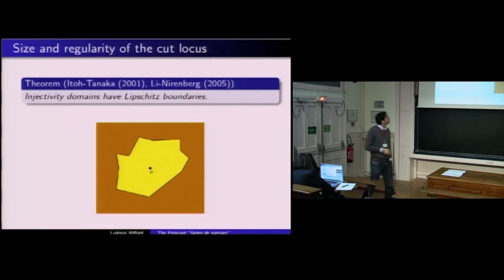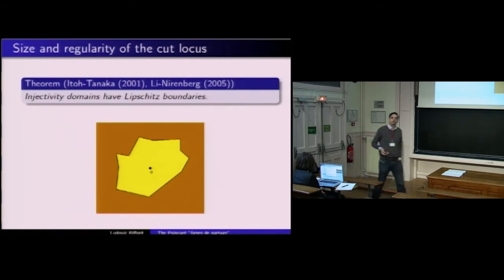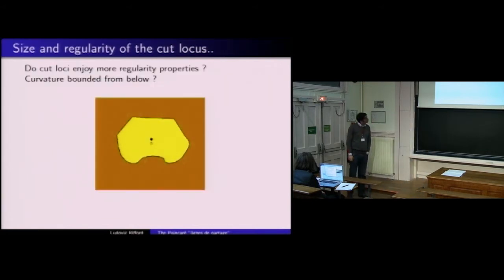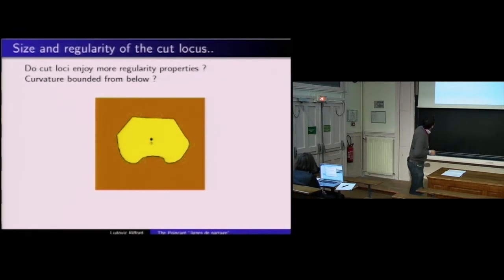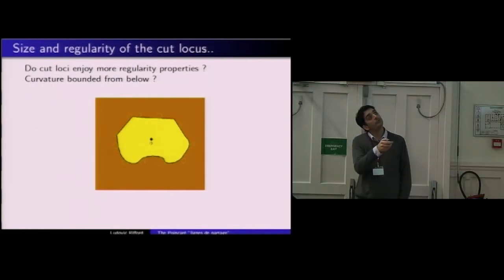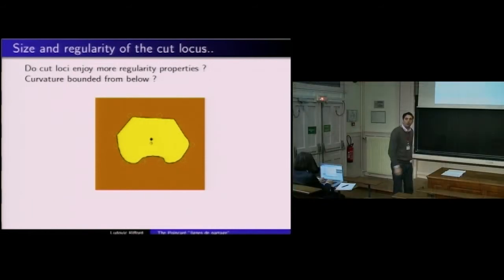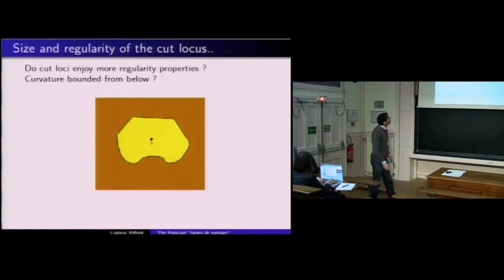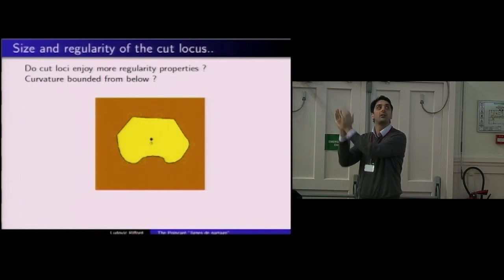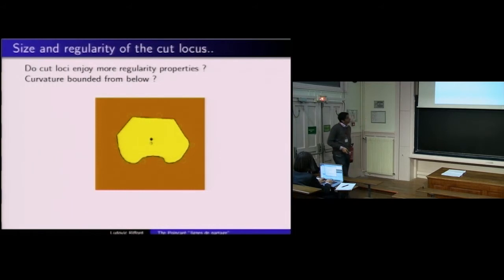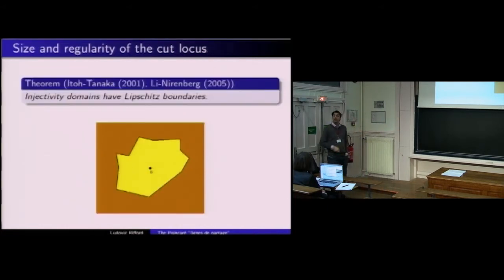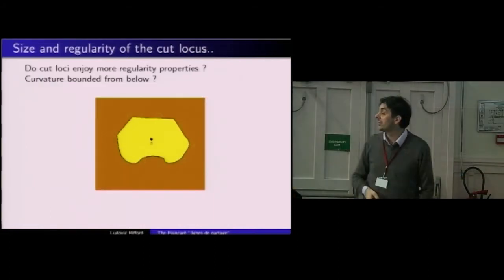Est-ce que le cut locus tangent est un ensemble à courbure bornée inférieurement ? Un tel ensemble est caractérisé par le fait qu'en chaque point, on peut dessiner une petite boule de rayon uniforme qui touche l'ensemble en ce point — ce qui interdit d'avoir des pics rentrants. On l'a vu pour le tore plat, dont le domaine est un carré vérifiant cette propriété. Un domaine à bord Lipschitz ne vérifie pas nécessairement cette propriété. Peut-on donc dire mieux que Lipschitz ?